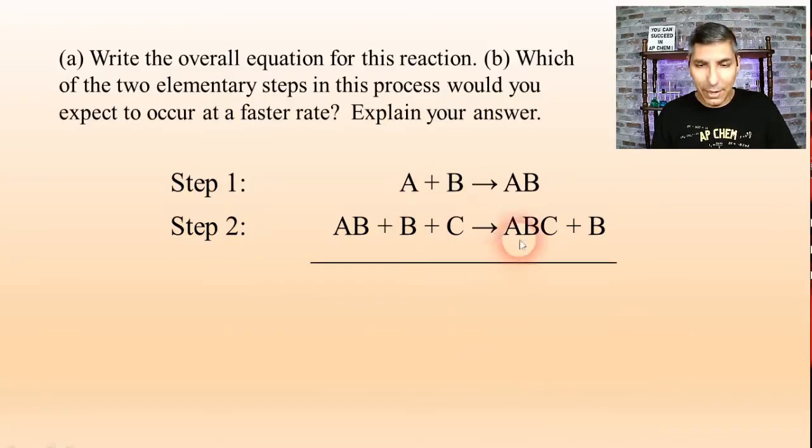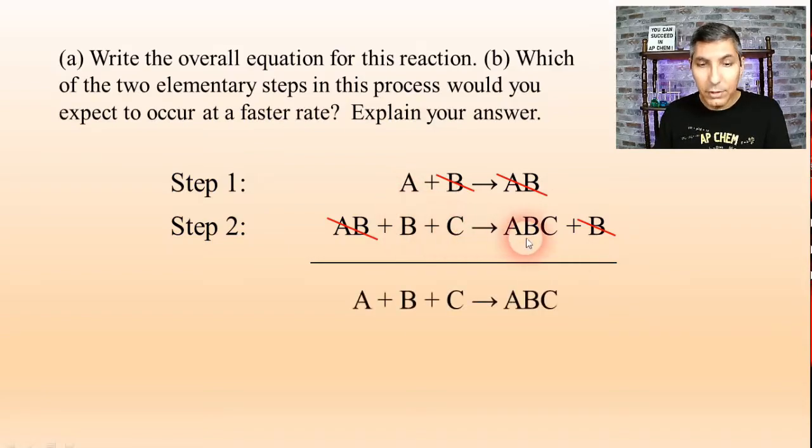So we want to cancel out what can be canceled out. And so we have AB on both sides, so that's going to be out. I also see a molecule of B that can be canceled on the left and right sides here. So the overall equation is going to be A + B + C → ABC. So that's our overall equation.